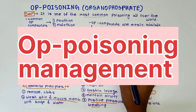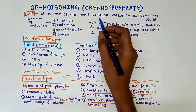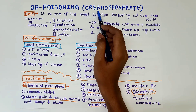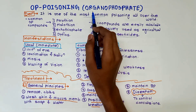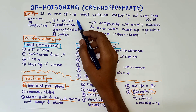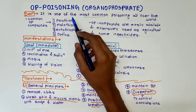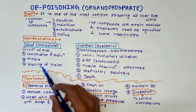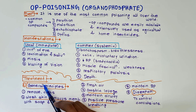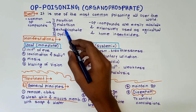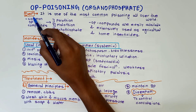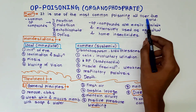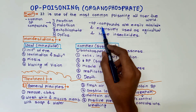Hello guys, welcome to my channel. I am Sudarshan, a third year MBBS student, and today's topic is OP poisoning, that is organophosphate compound poisoning. The questions asked in exams regarding OP poisoning cover definition, manifestations, and treatment — which is the most important part. We will go through them one by one. First, the definition: it is one of the most common poisonings all over the world.